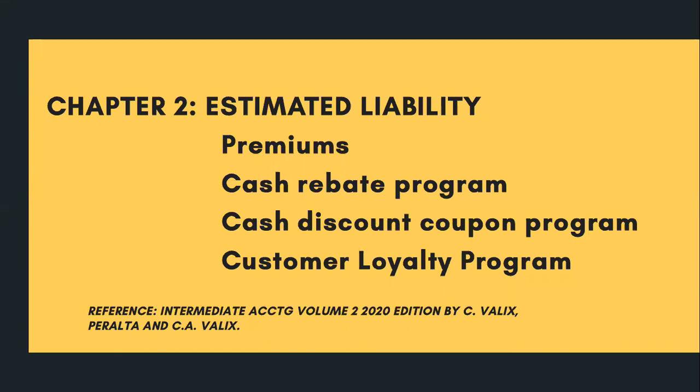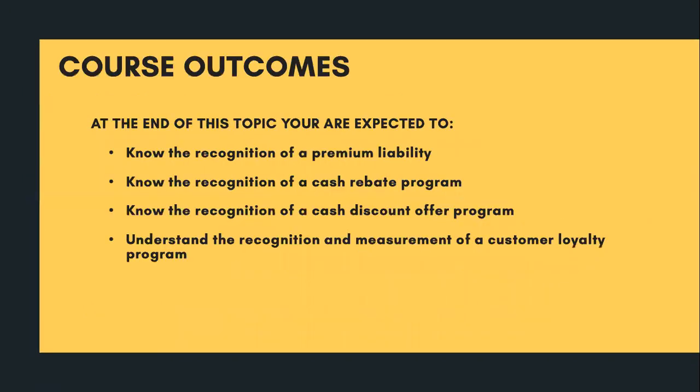Good day. This is a continuation of our Chapter 1 discussion about estimated liability. This time we will discuss estimated liability, particularly the premiums, cash rebate program, cash discount coupon program, and customer loyalty program. The reference for this discussion is Intermediate Accounting Volume 2, 2020 edition by Conrado Valix, Soriano, and Christian Aris Valix. Course outcomes: at the end of this topic, you are expected to know the recognition of a premium liability, cash rebate program, cash discount offer program, and understand the recognition and measurement of a customer loyalty program.